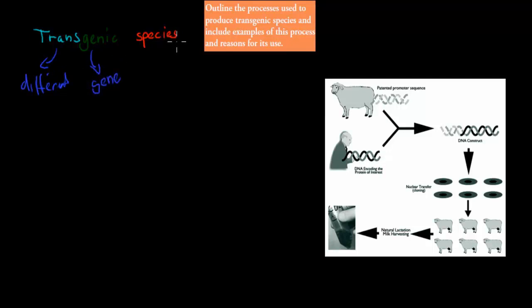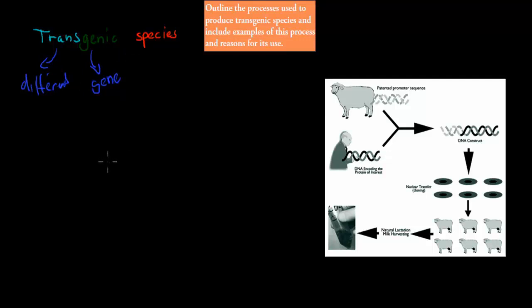'Species' obviously refers to species, so what that actually means is we have a species which has genes from different species. So one species, like an animal, has genes from two different types of species — that's what a transgenic species is.